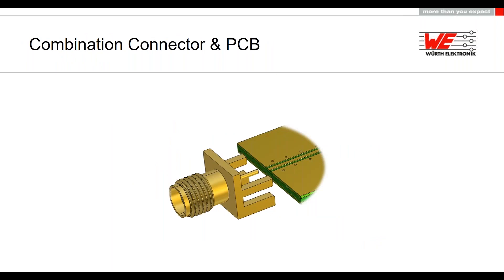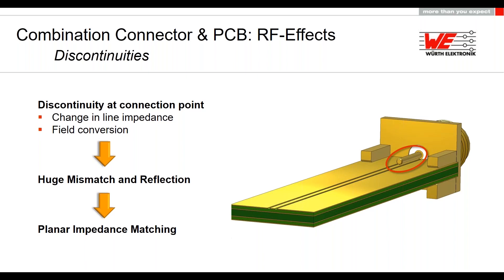Now we talk about the connector-PCB and transmission line interface, showing typical combinations between SMA inner pin style and PCB layer stack. Due to the change in material and geometry we get changes in line impedance and field conversions, causing mismatches and reflections. To avoid this, the connection area has to be optimized by using planar matching circuits — this is a very important concept that will be revisited later in the presentation.